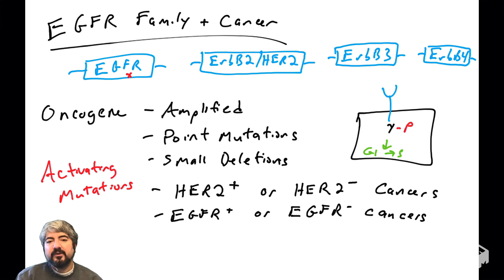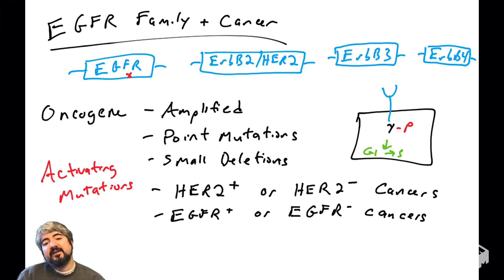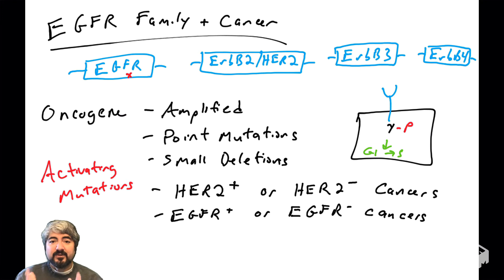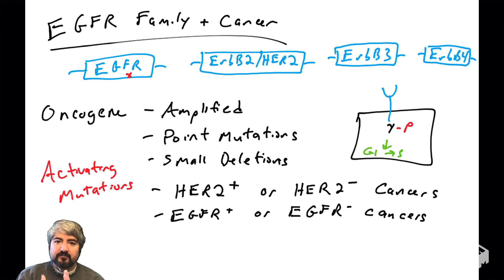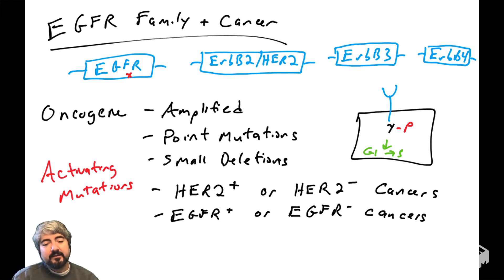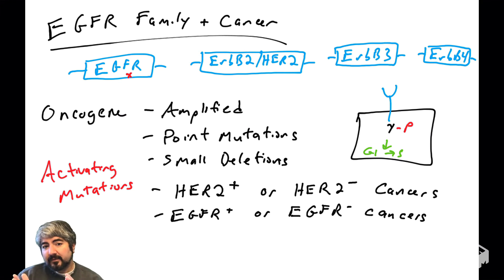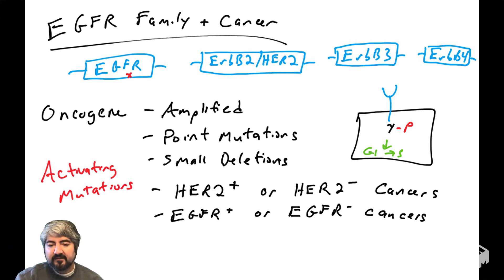Similarly, cancers are characterized as either EGFR positive or EGFR negative — referring to whether the cancer has a mutation in the EGFR gene that is driving proliferation of the cells. This again dictates what kind of treatment plan a clinician goes with. Not all, but many human cancers have a mutation in one of these EGFR family members.